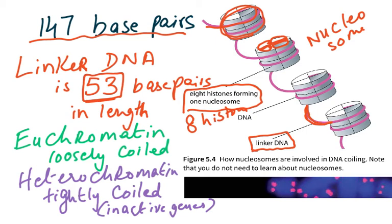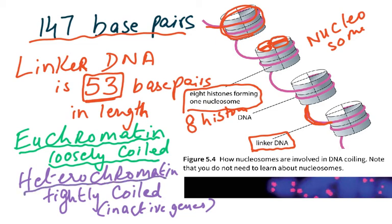The chromosomal material has two names depending on how tightly it is coiled. When it is loosely coiled it is called euchromatin, and when it is tightly coiled it is called heterochromatin — which is the state of inactive genes. Remember: euchromatin for loosely coiled, heterochromatin for tightly coiled.